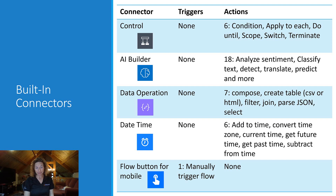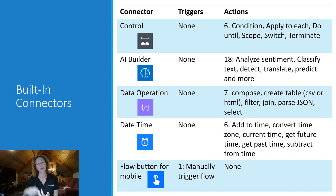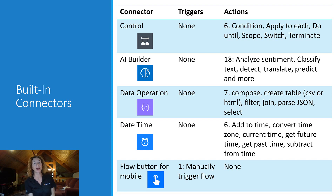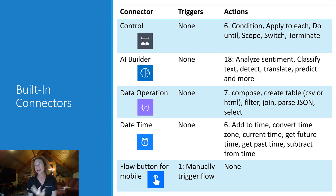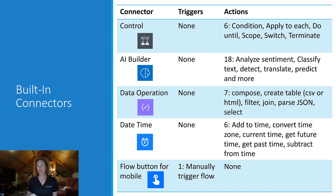Data Operation — I've been using this one a lot lately, specifically Compose. If you need to compose something that you're going to use later in a flow, that's a great place to do it. Create Table gives you an option for CSV or HTML, and I've been using this when I want to display data from an output in a nice chart or table. Then we have Filter, Join, Parse JSON, and Select. It's a super valuable connector.